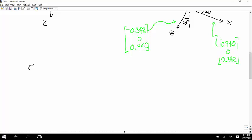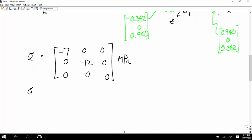Okay, so the stress tensor then is negative 7, 0, 0; 0, negative 12, 0; 0, 0, 0. And this is in megapascals. And so the Voigt stress is negative 7, negative 12, 0, 0, 0, 0.